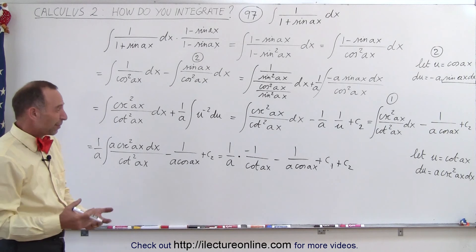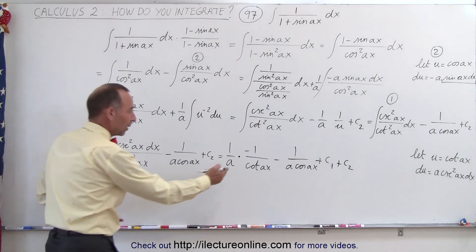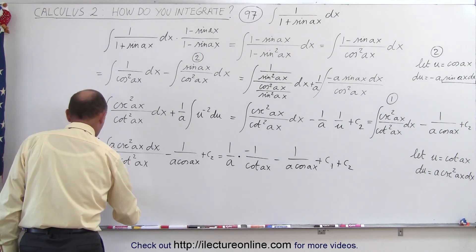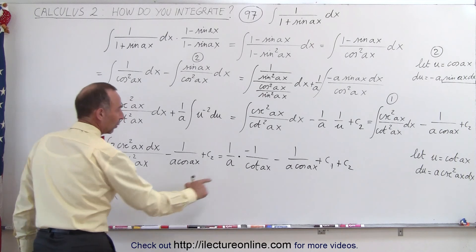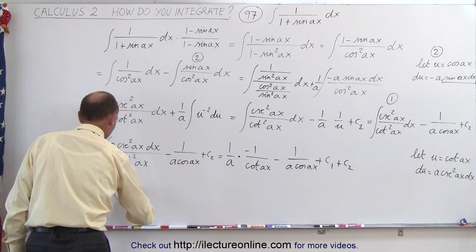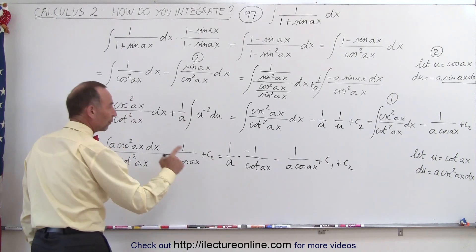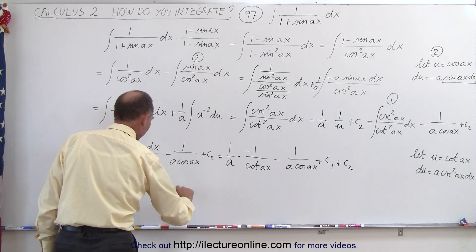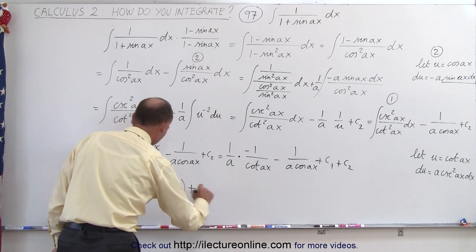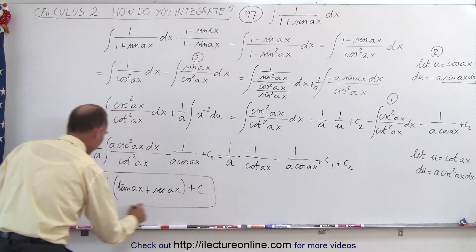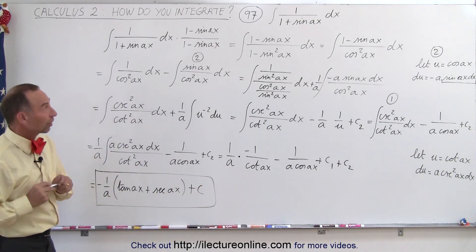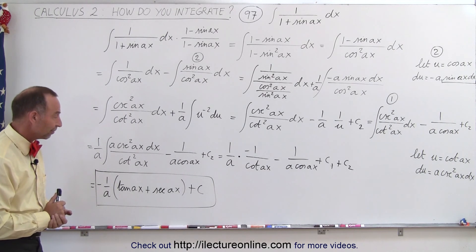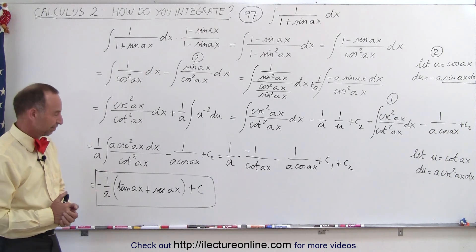We can simplify by pulling out a minus 1 over a: minus 1 over a times — 1 over cotangent becomes the tangent of Ax, and 1 over cosine becomes the secant — so plus the secant of Ax, and we combine the two constants of integration into C. This is the result of the original integral of 1 over 1 plus the sine of Ax. And that's how it's done.